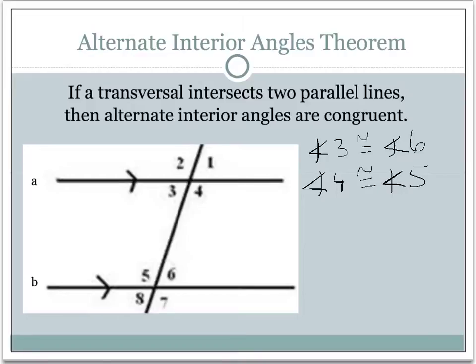Since the lines are already parallel and the transversal is cutting them, we know those angles are congruent. If we didn't know that the lines were parallel, we would just say that they were alternate interior angles — we wouldn't be able to say anything about their angle measures being congruent.